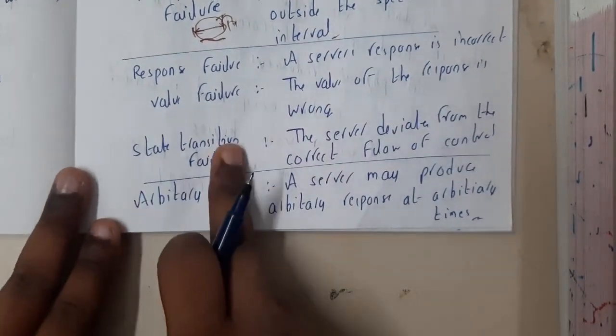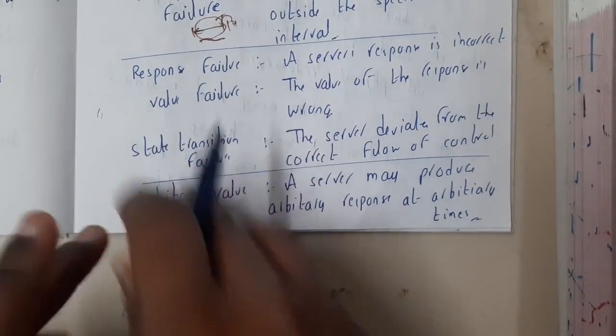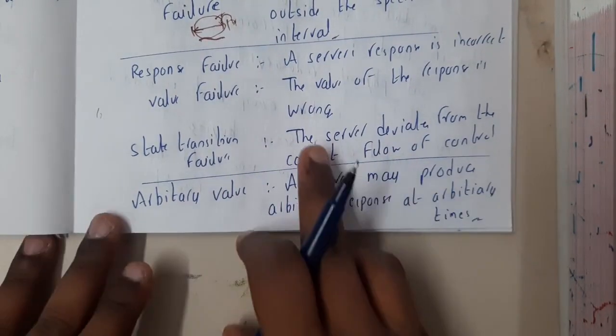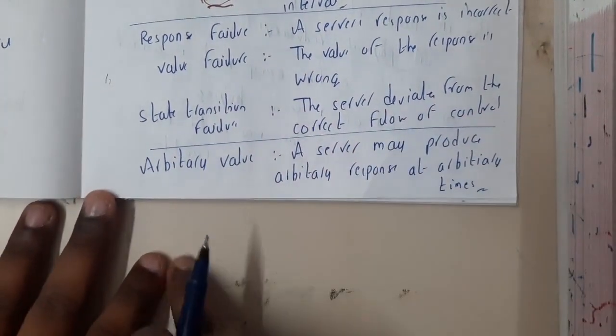State transition failure: basically the transition states, like the flow is completely in a random way or some kind of wrong way. The server deviated from the correct flow of control. Yes, that's what I was trying to say.